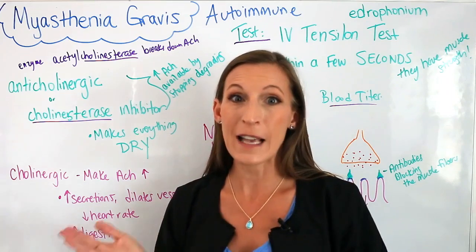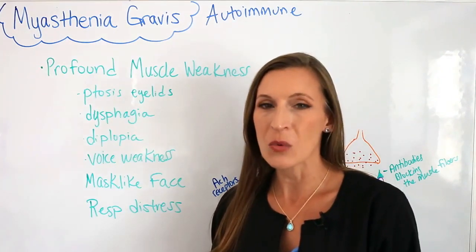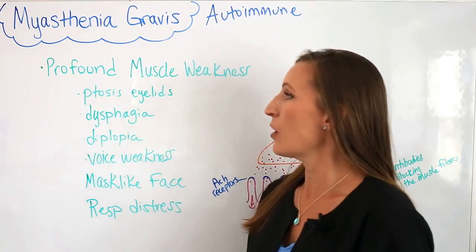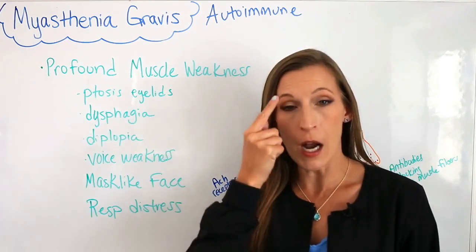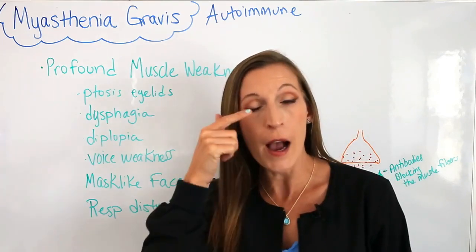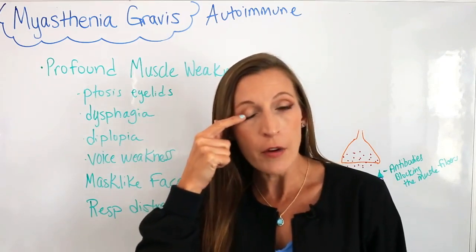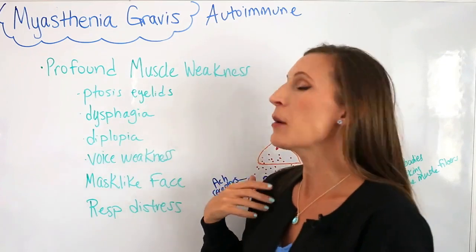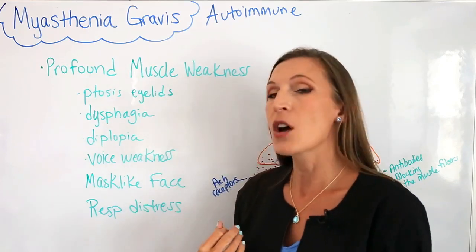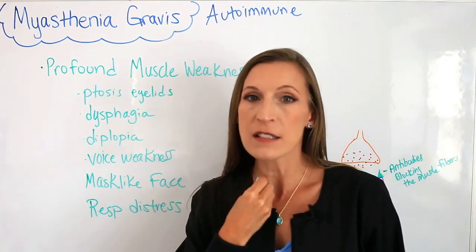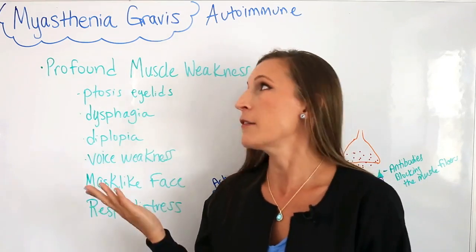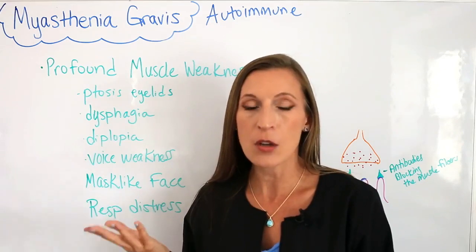Now let's look at signs and symptoms. The patient will have profound muscle weakness — it can be in the extremities, but you're definitely going to see it in their face. You'll see ptosis of the eyelids, which is a droopy eyelid where the eye area is very droopy and partially or halfway covered. It could be one or both eyes. Dysphagia — difficulty swallowing and chewing. We have tiny muscles throughout the face that help us talk and breathe, and those can all be affected.